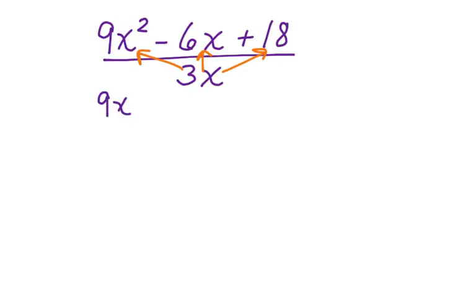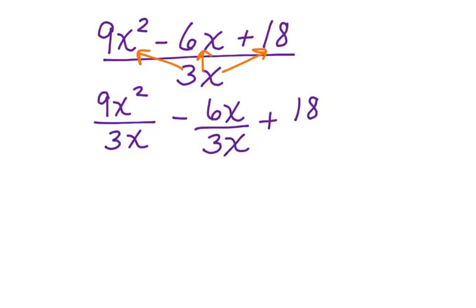So we have 9x squared divided by 3x minus 6x divided by 3x plus 18 divided by 3x. Let's start with the first term. 9x squared divided by 3x. We can start with the coefficients. 3 goes into 9 three times and this x simplifies with this x squared leaving us with an x alone.